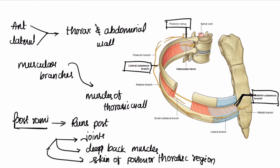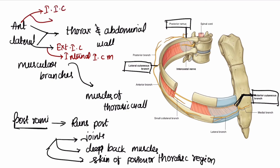As we see in the diagram, the lateral cutaneous branch pierces two muscles: the external intercostal muscle and the internal intercostal muscle. The anterior cutaneous branch pierces the internal intercostal muscle and the external intercostal membrane. That's all about the video.